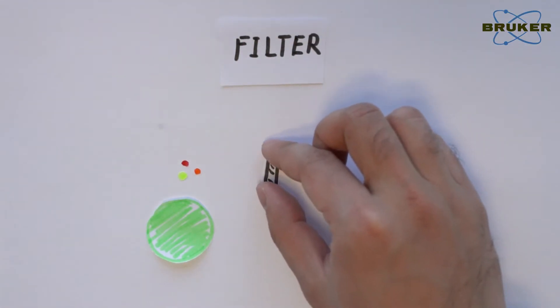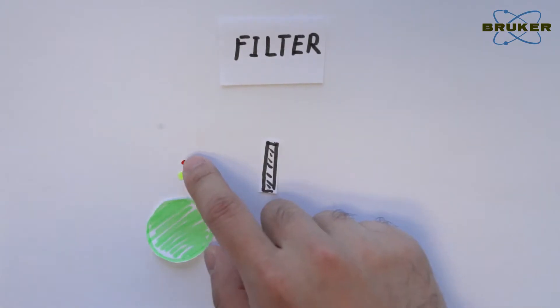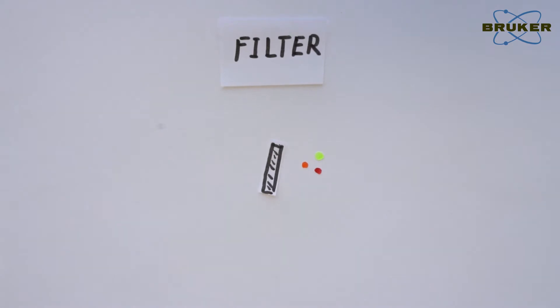The next key part is the optical filter. This filter only allows Raman scattered light to pass through, and reflects Rayleigh scattered light, whose wavelength has not been changed.